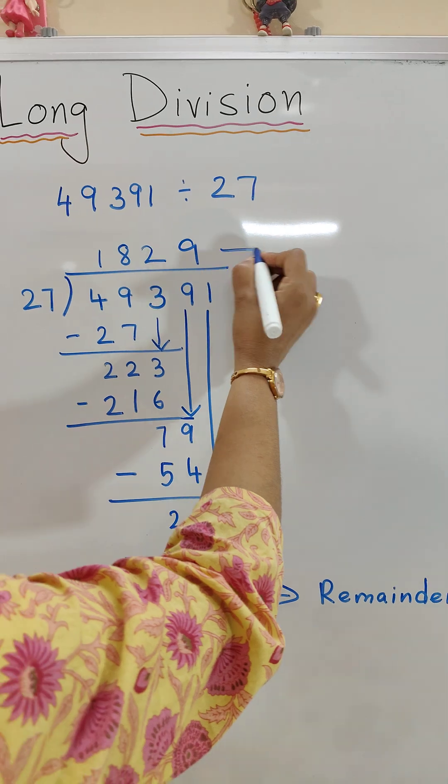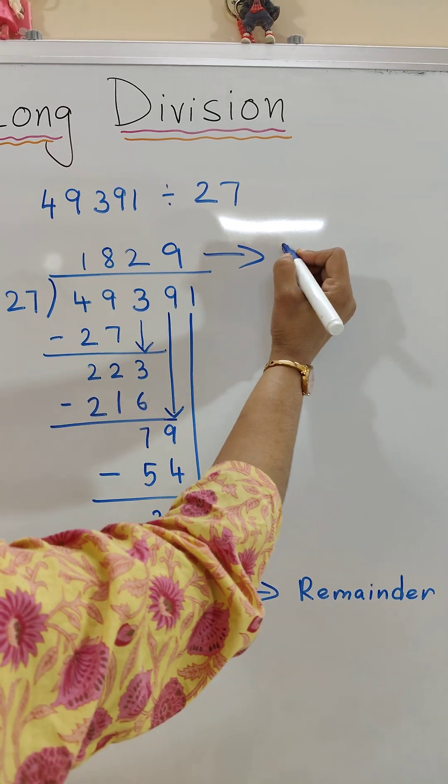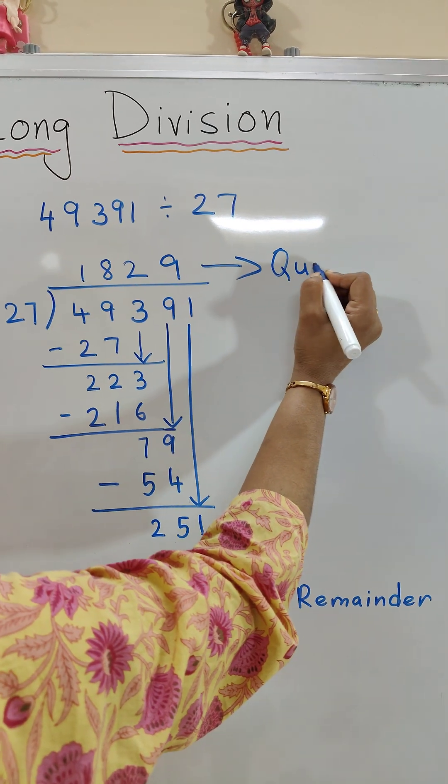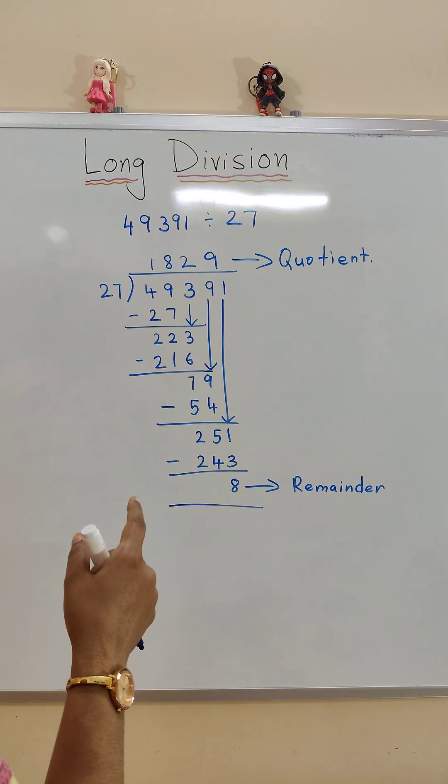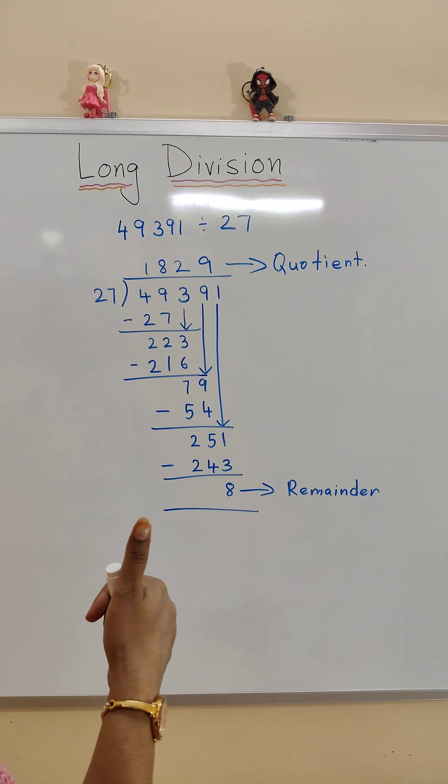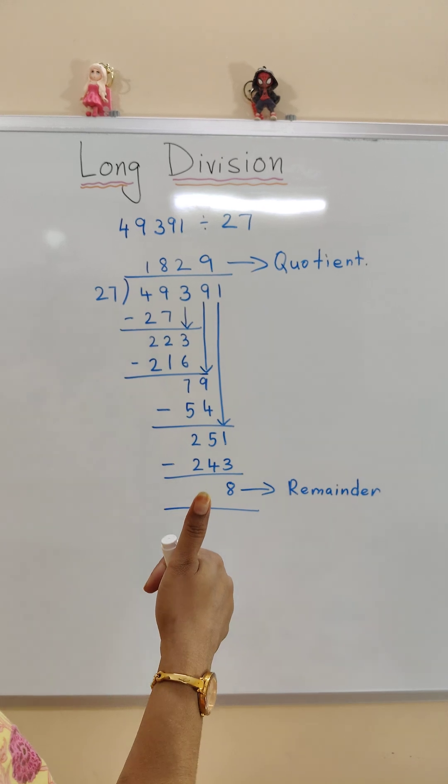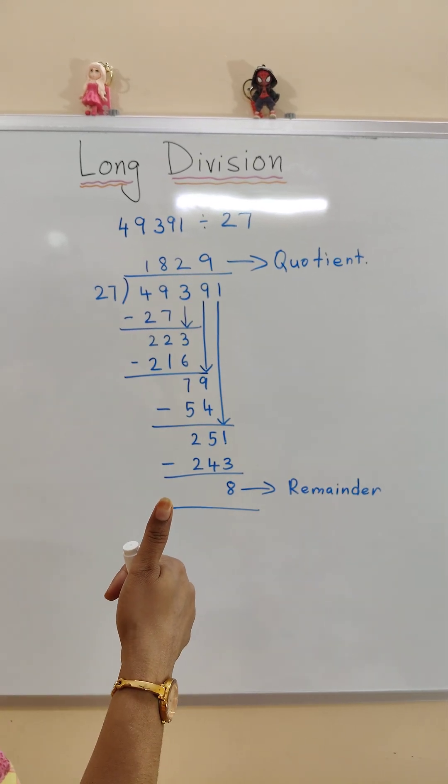The quotient is 1829. So this is how we do long division. Thanks for watching the video! Please like, share, and subscribe to Math Only Math for more videos. Thank you.